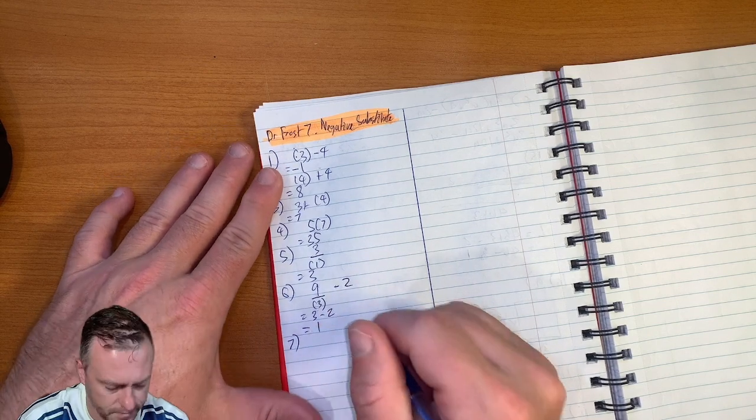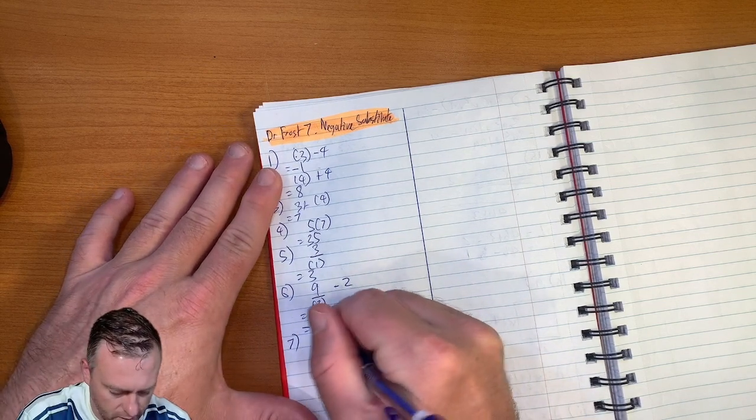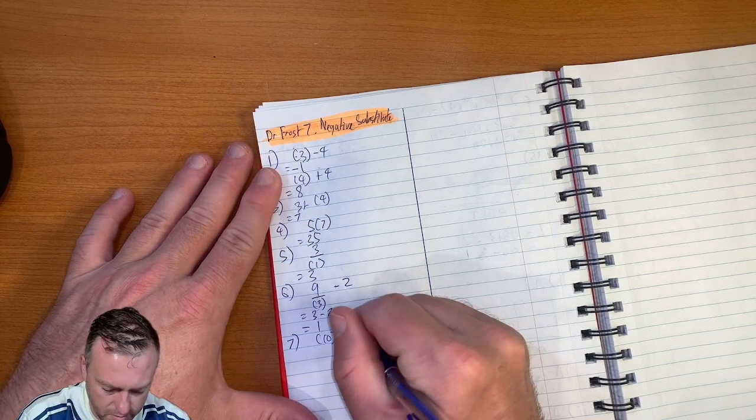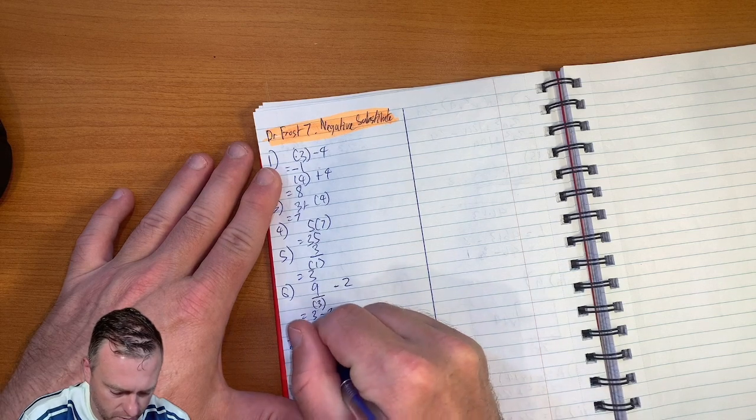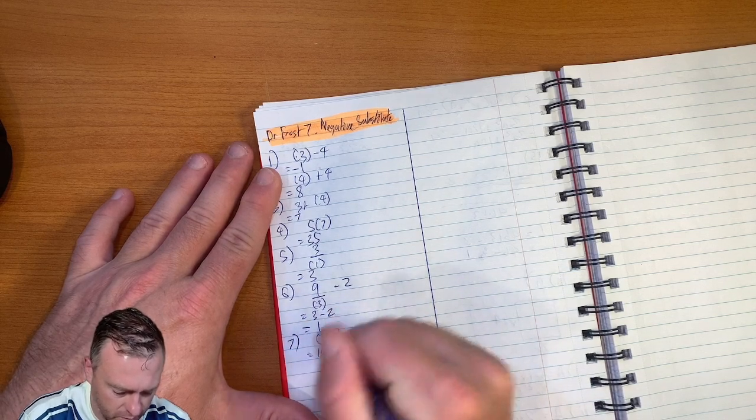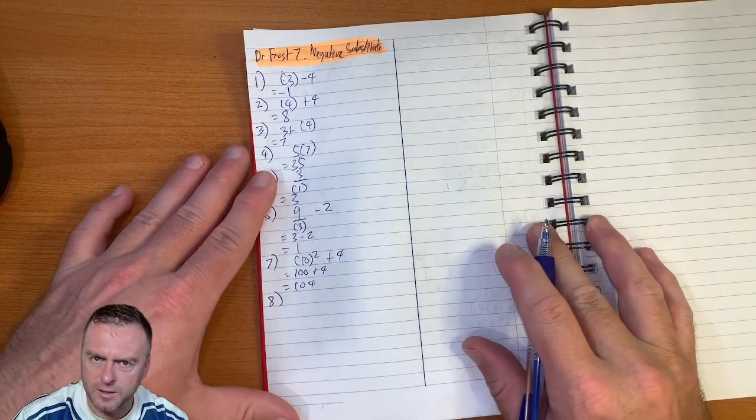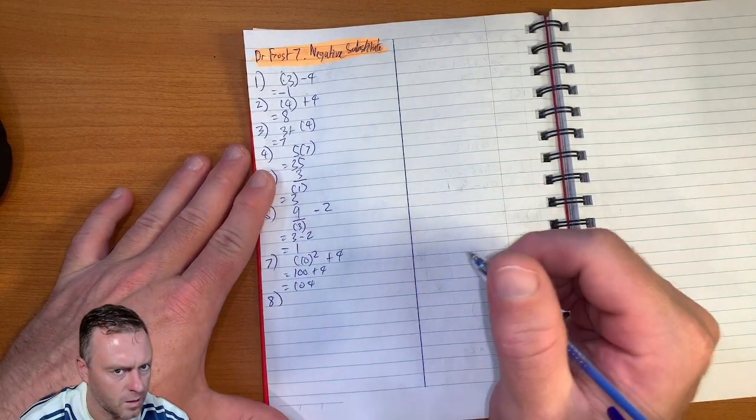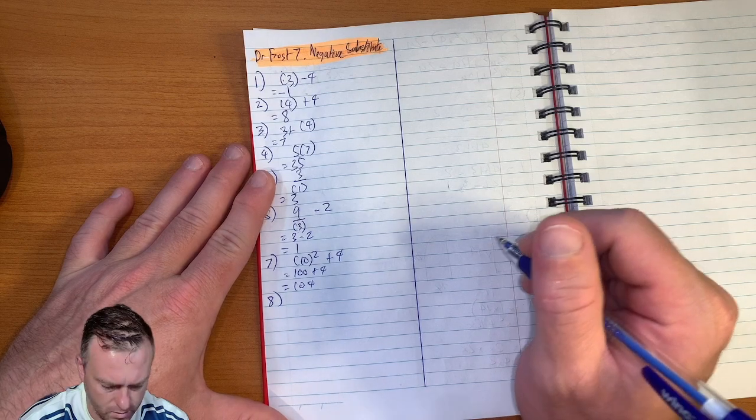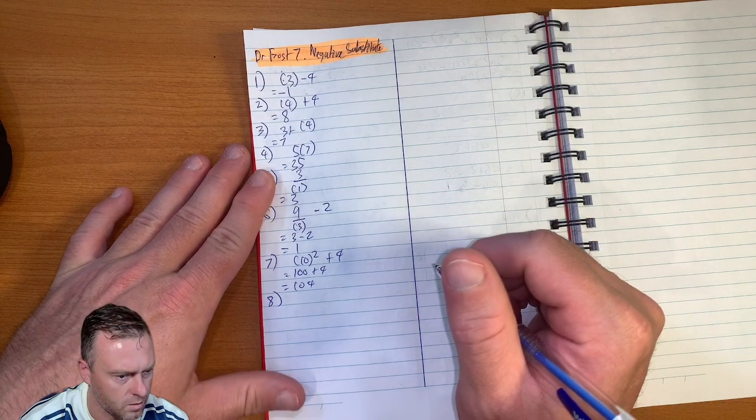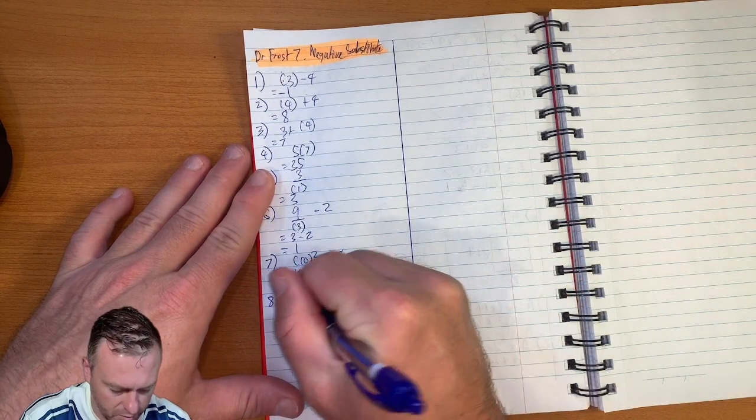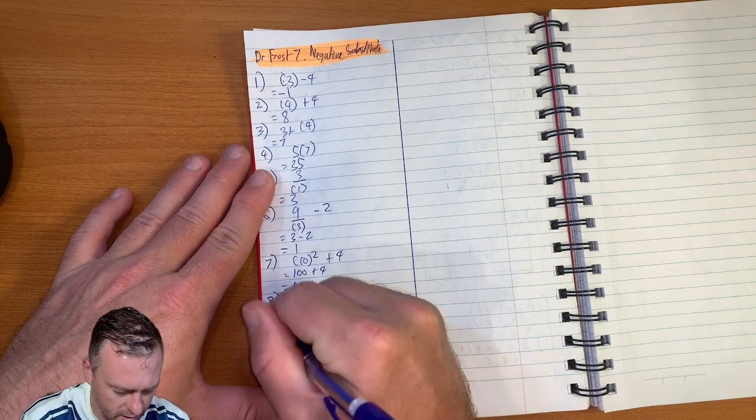Question seven. Ten all squared, plus four, four, which equals a hundred, plus four, equals one over four. Question eight, is four squared, equals sixteen.